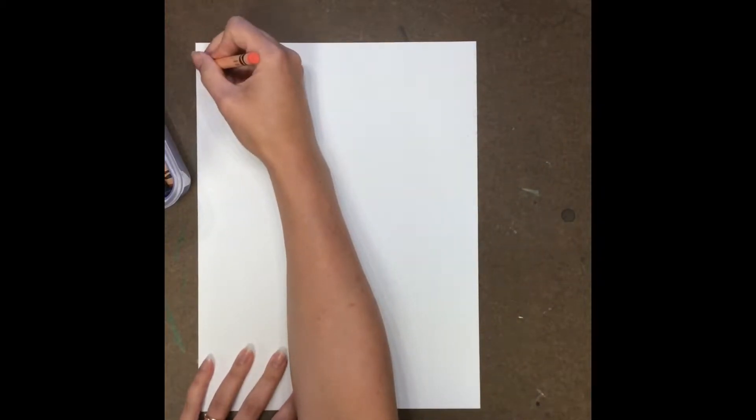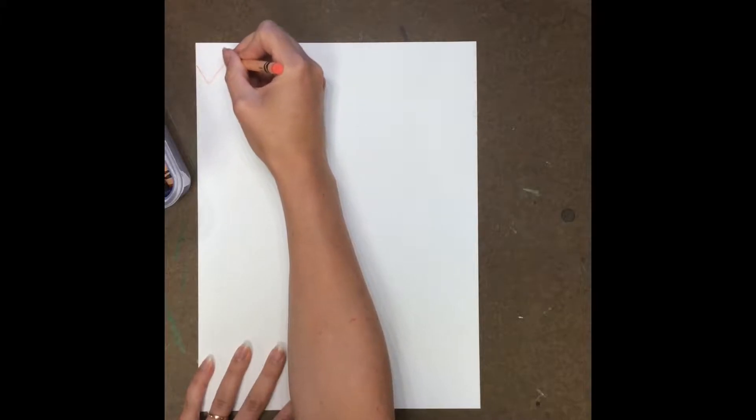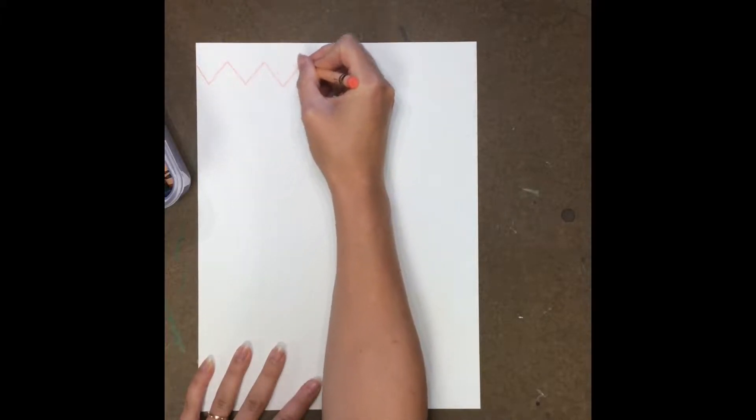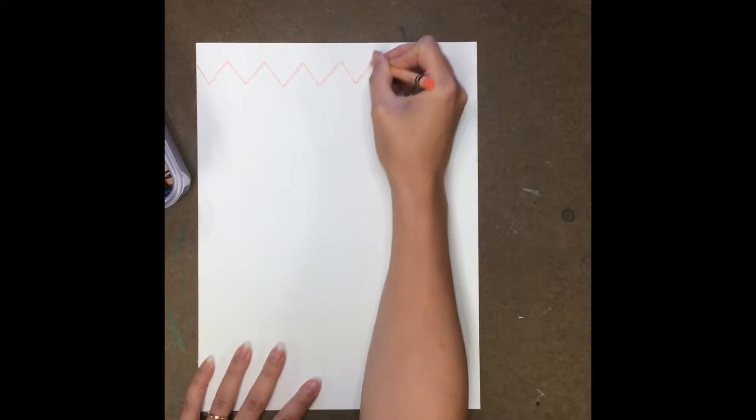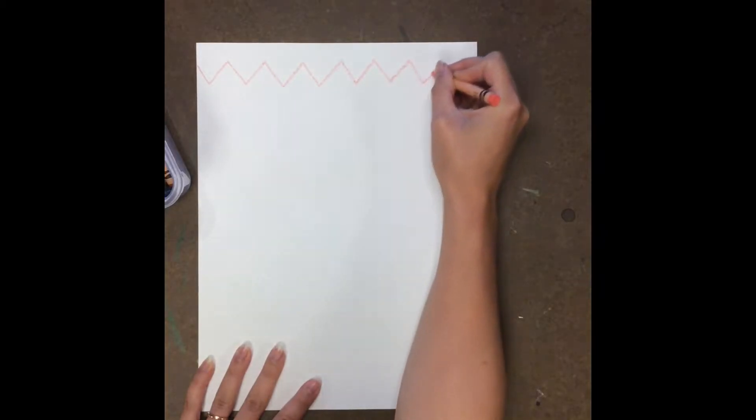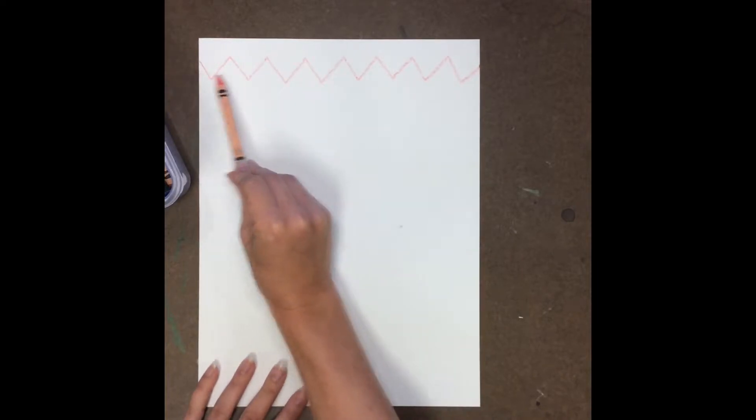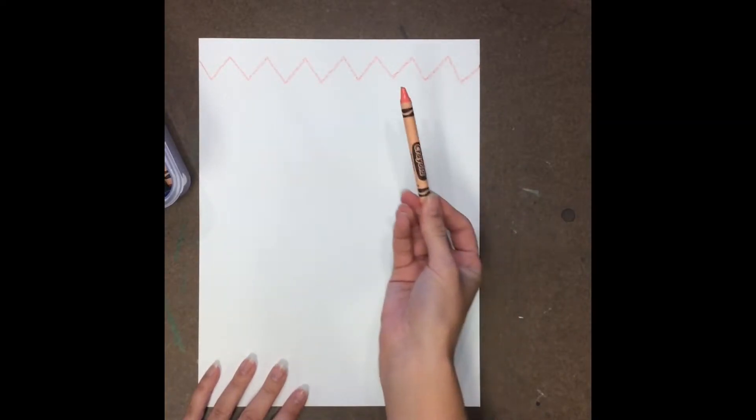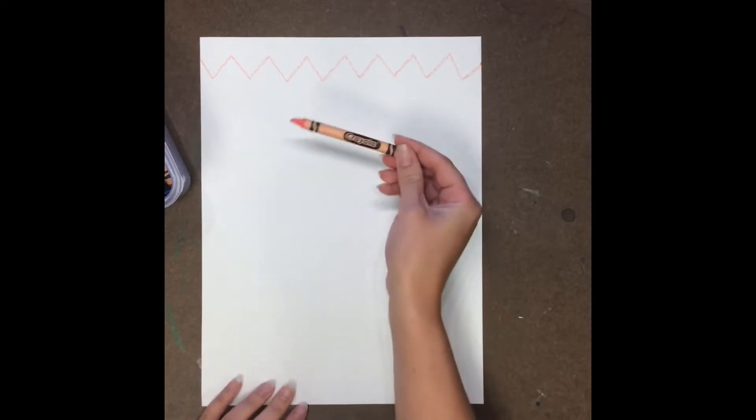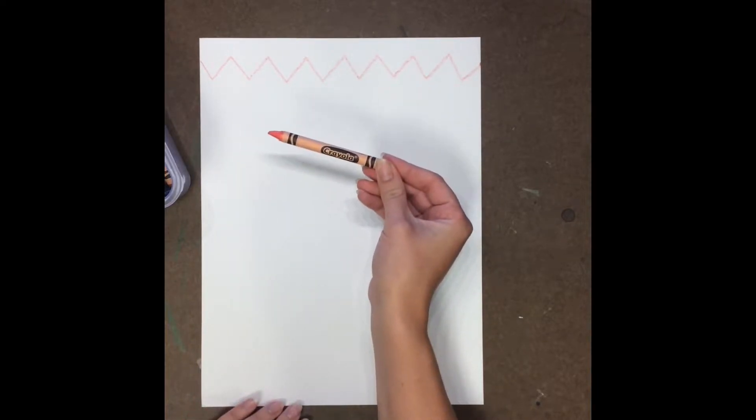And we can just start out with any type of line that we want. So I'm going to choose zigzag. Now the whole point of this lesson is if I already have a zigzag line, for my next line I need to pick something different so that I have a variety. That means lots of different kinds.